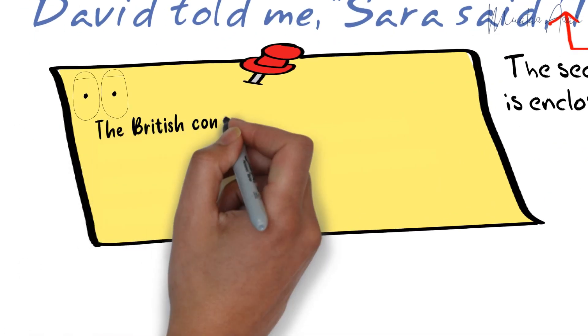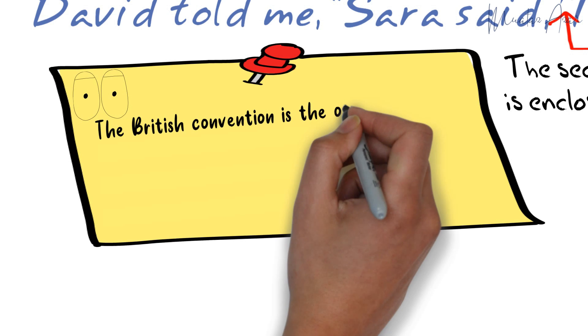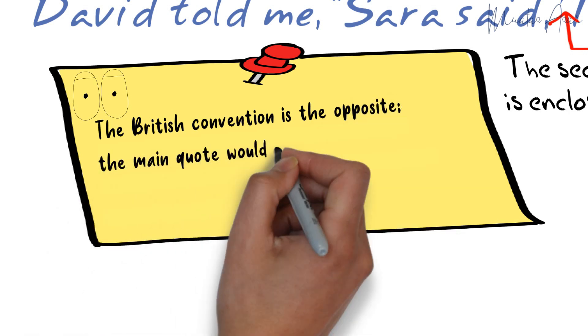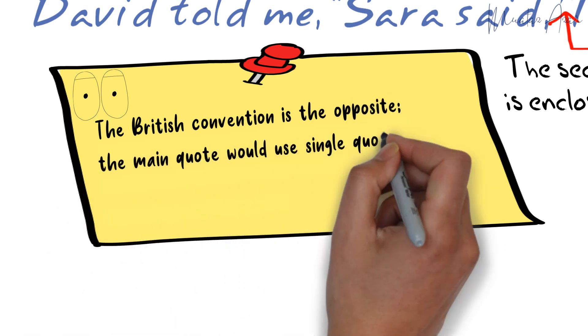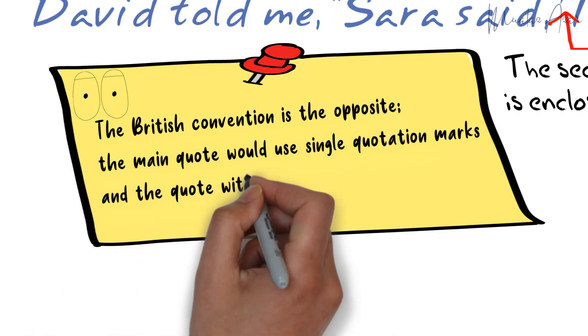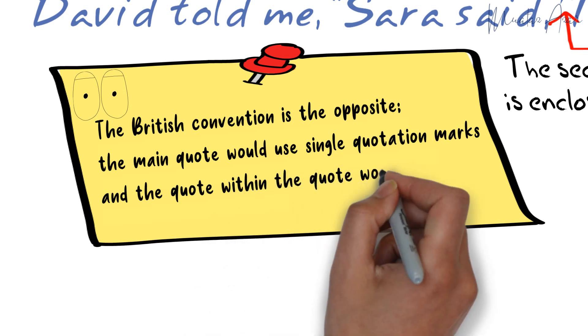Note that the British convention follows an opposite rule: single quotation marks are used with the main quote and double quotation marks with the second quote.